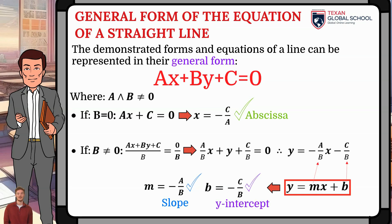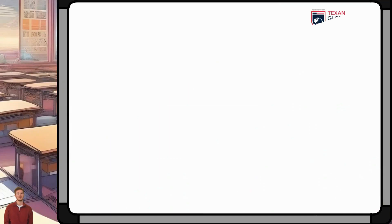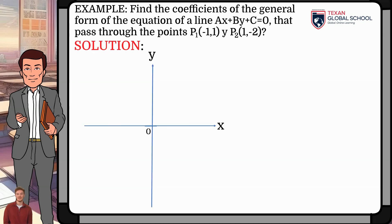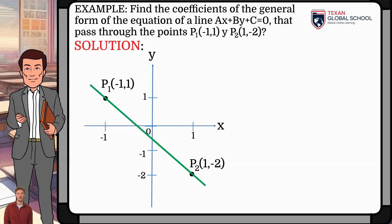We see then that with the coefficients of the general form, we can obtain the elements of any line. In conclusion, a line is determined if at least two independent conditions are known. Let's look at an example: find the values of the coefficients of the general form of the equation of a straight line. It passes through the points P₁ with coordinates (−1, 1) and P₂ with coordinates (1, −2). Since we have two conditions — in this case, two points — we can graph first to see the behavior of the line.